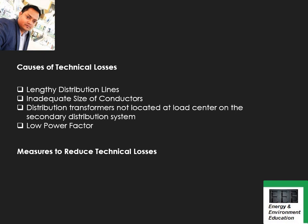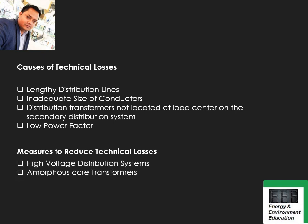You must remember all four causes of technical losses along with a brief explanation. They may also ask you to write the measures to reduce technical losses. There are two types of measures: the first is HVDS — High Voltage Distribution System — and the other is amorphous core transformers. You can refer to the book for detailed explanation, which is given in a very simple manner.